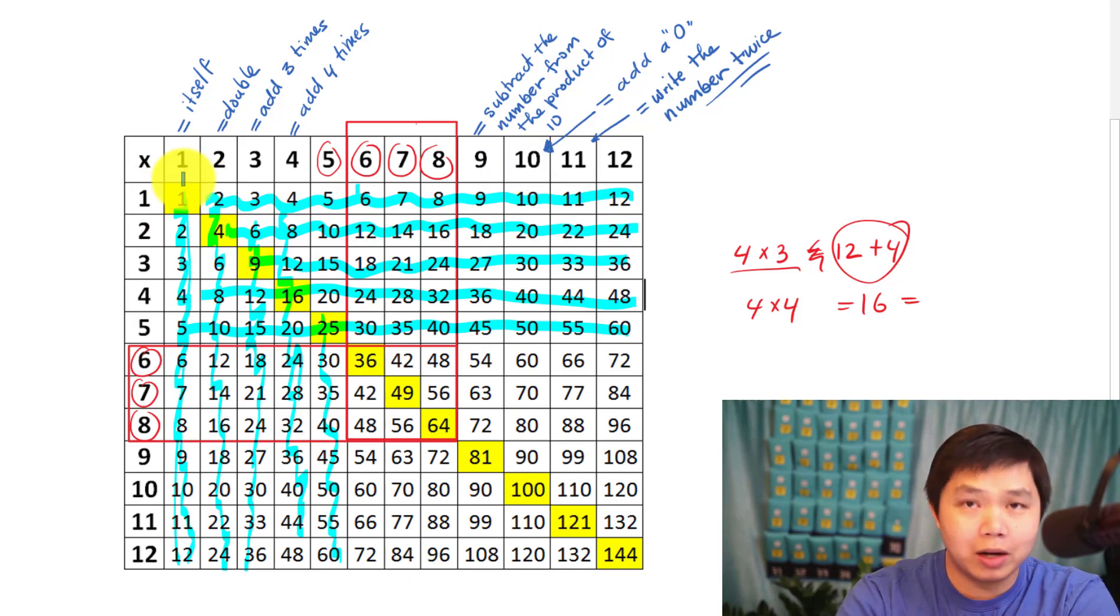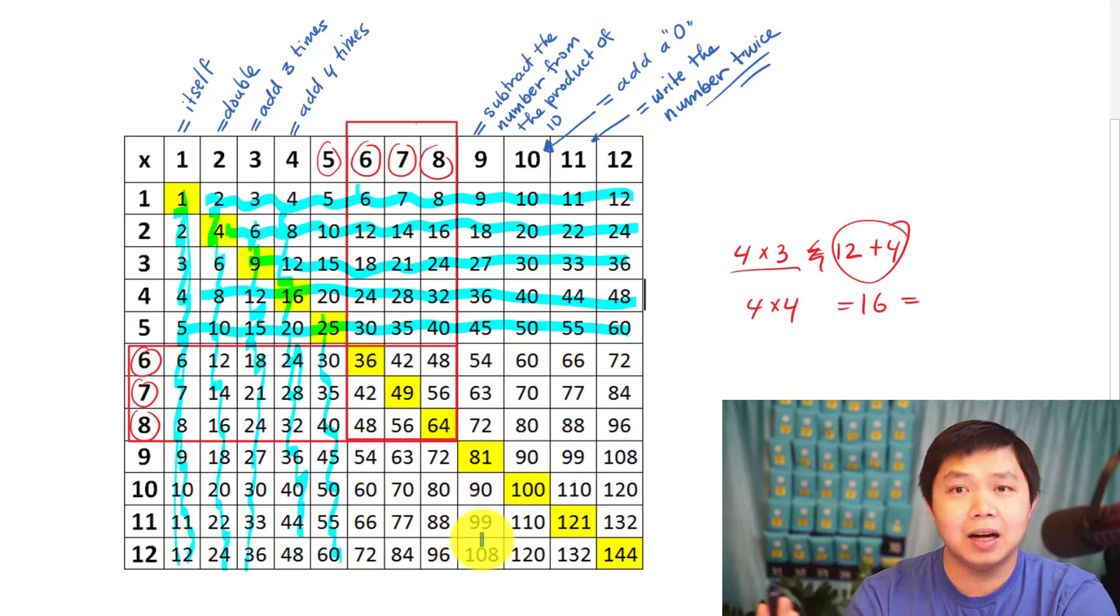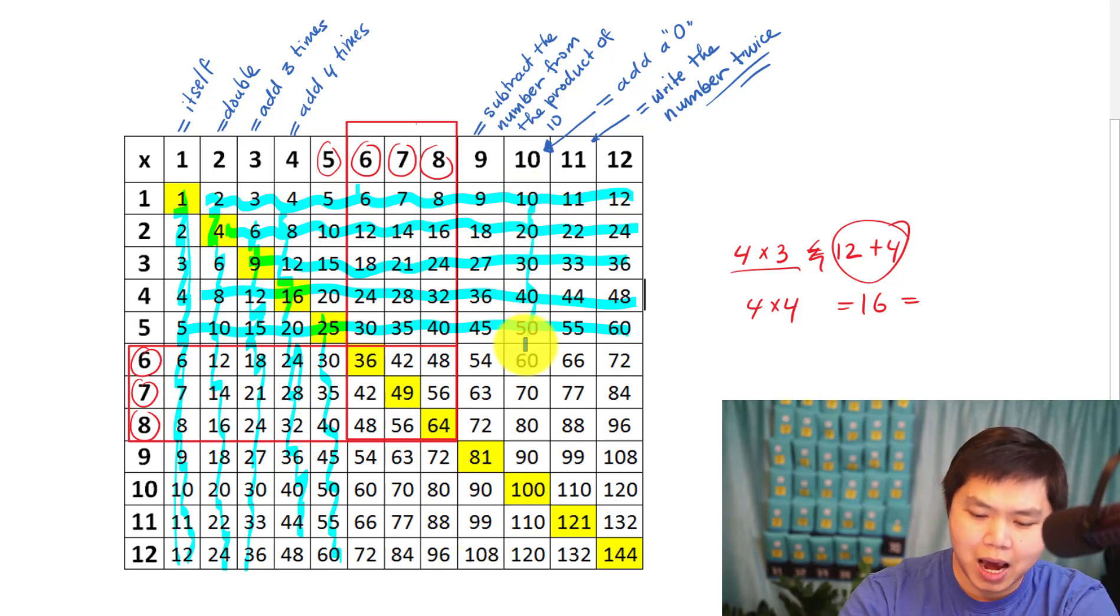For example, ten times one, what's one add a zero? Ten. What is ten times two, what's two plus another zero? Twenty. So isn't that easy? Even ten times twelve, what's adding a zero after twelve? So ten is super easy. Now remember ten, let's go to eleven.